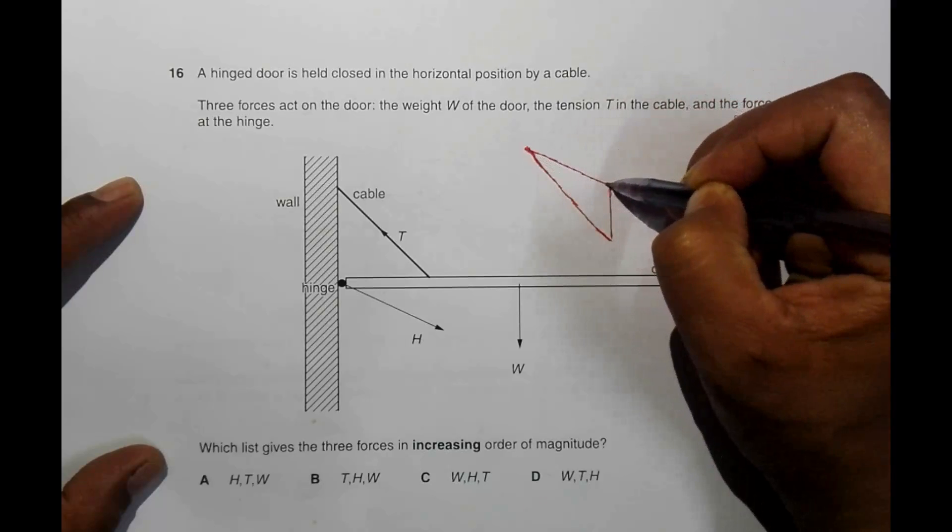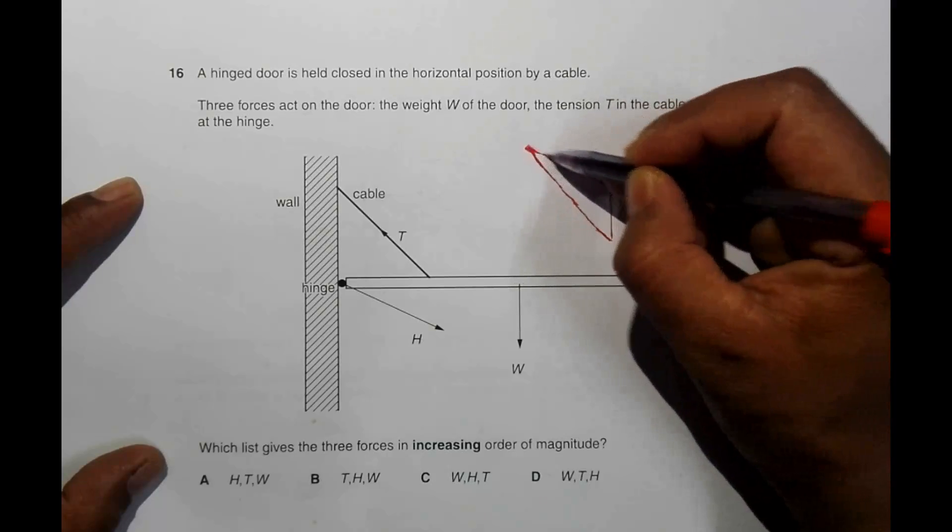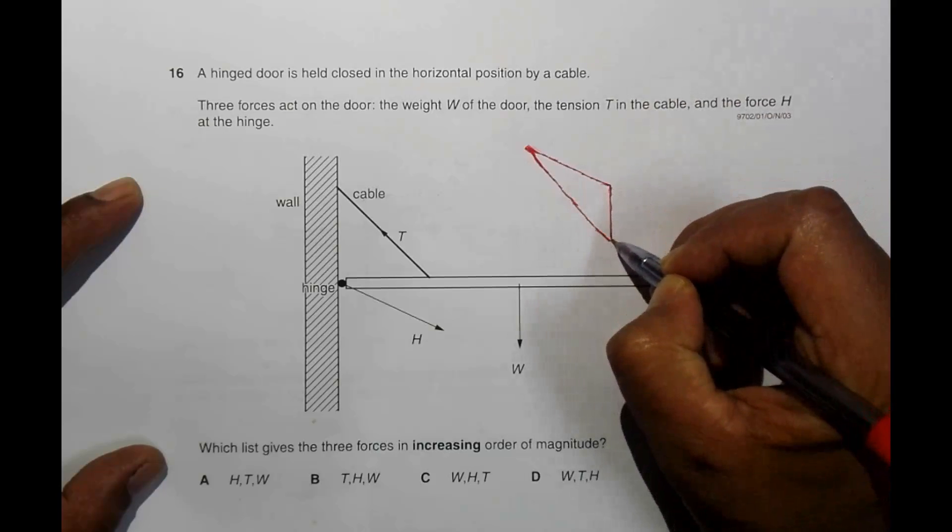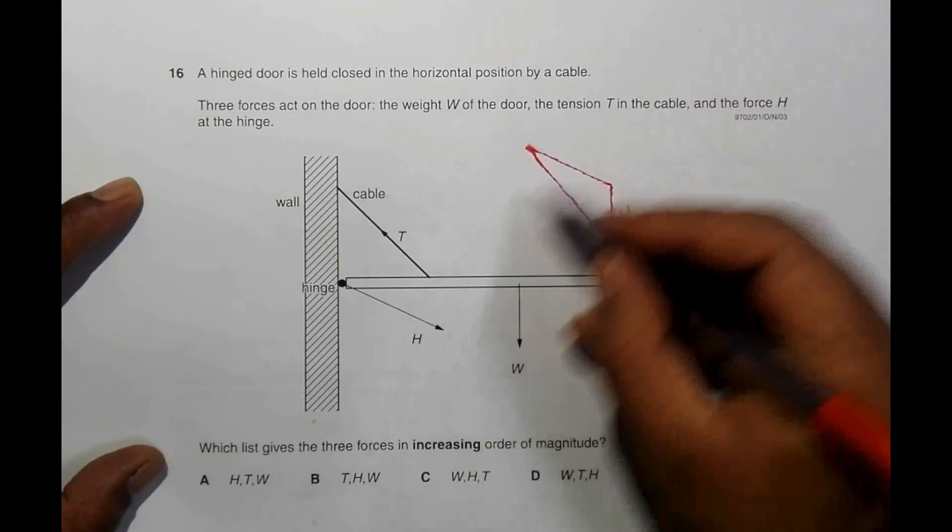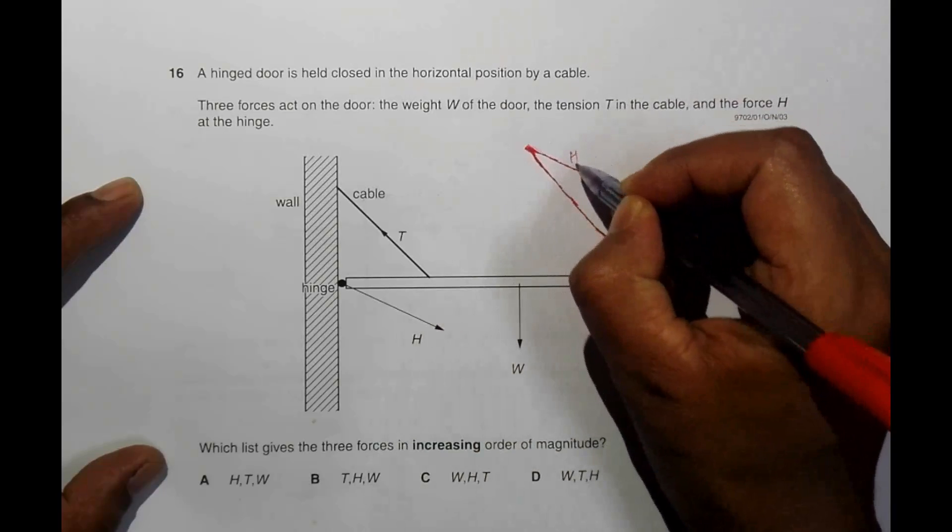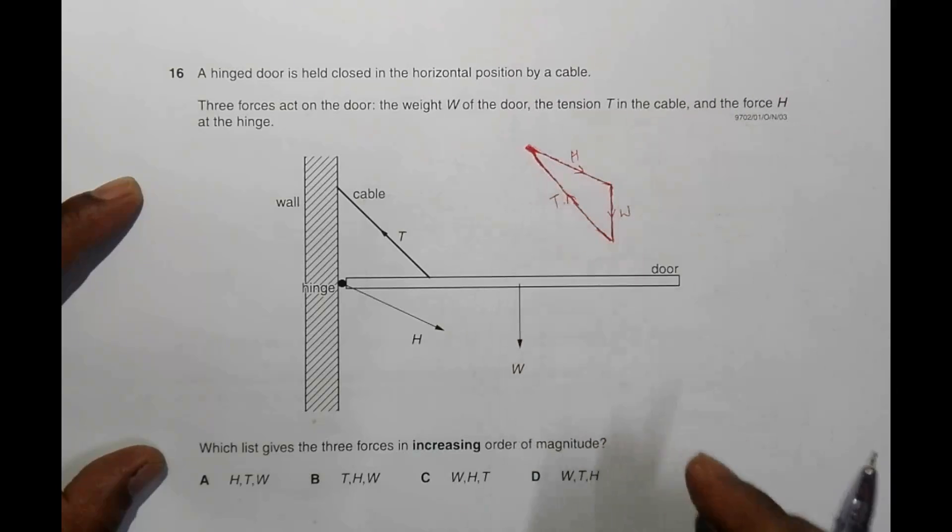And then let's draw this H. This thing should be parallel to this H, and hopefully it is parallel. Most probably it is parallel. So this thing is parallel to this W.